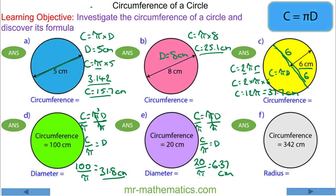Finally, for question f, same idea: circumference divided by pi will give you the diameter. So 342 divided by pi gives you 108.6. That 108.6 is the diameter of the circle.